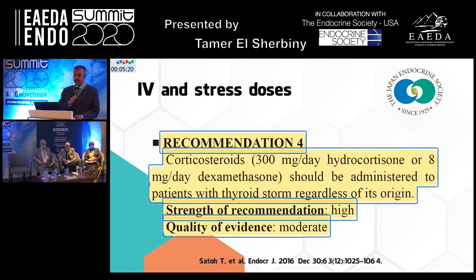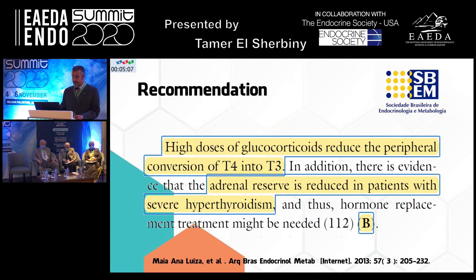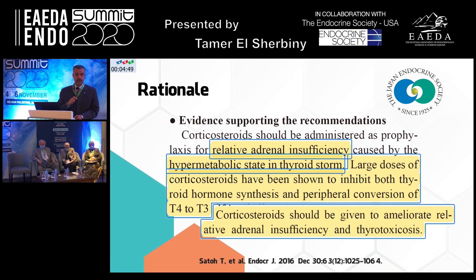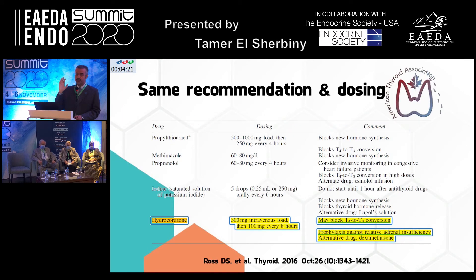After establishing the diagnosis, the Japan Endocrine Society recommends glucocorticoids: 300 milligrams per day of hydrocortisone, or alternatively 8 milligrams of dexamethasone per day — a strong recommendation with moderate quality of evidence. The Brazilian Society of Endocrinology and Metabolism gave the same recommendation and dosing: hydrocortisone 100 milligrams every 8 hours, or dexamethasone 2 milligrams every 6 hours. The rationale: first, there is relative adrenal insufficiency caused by the hypermetabolic state of thyroid storm; second, very high doses of glucocorticoids impair secretion and conversion of thyroid hormones. The American Thyroid Association gave the same recommendations, dosing, and rationale.